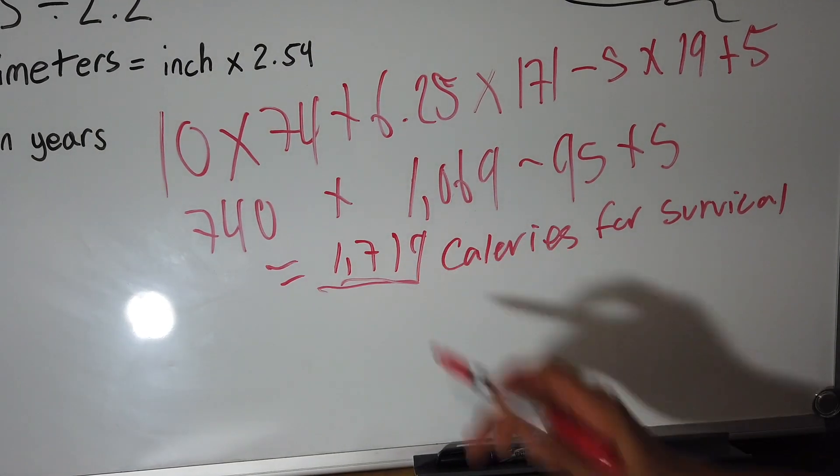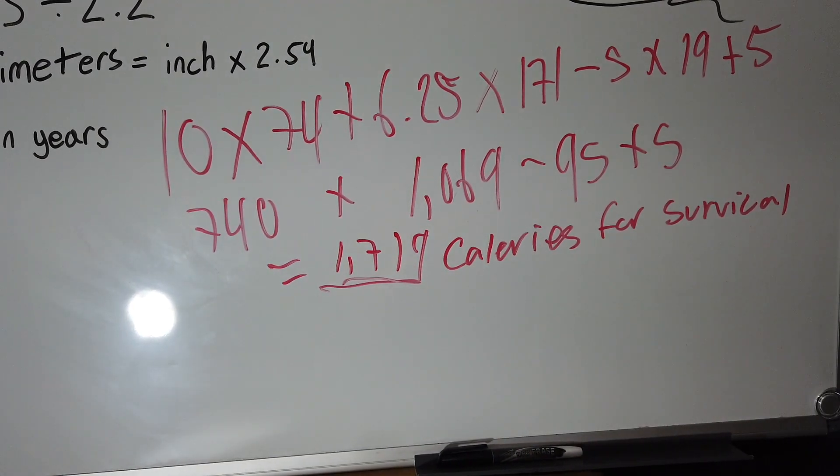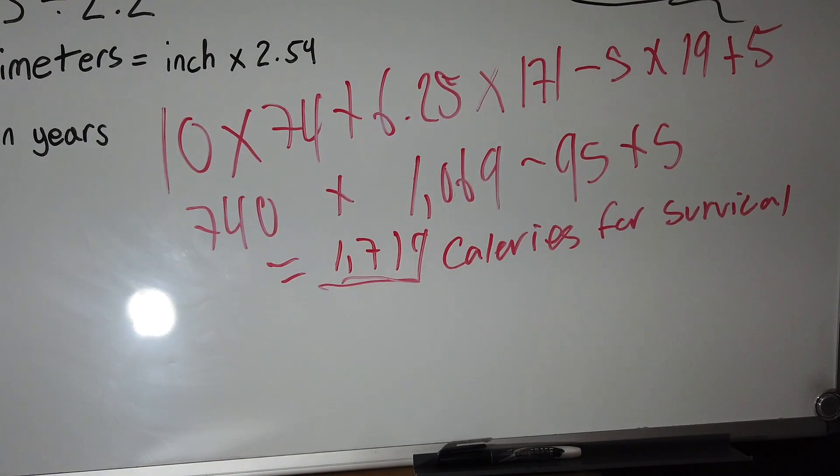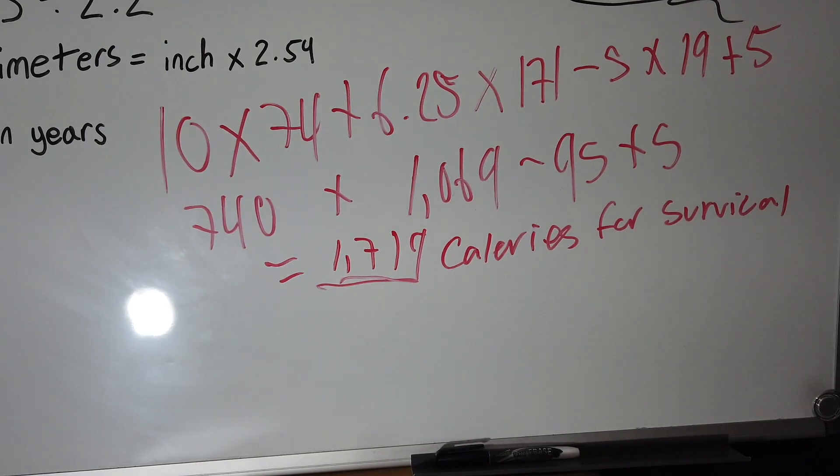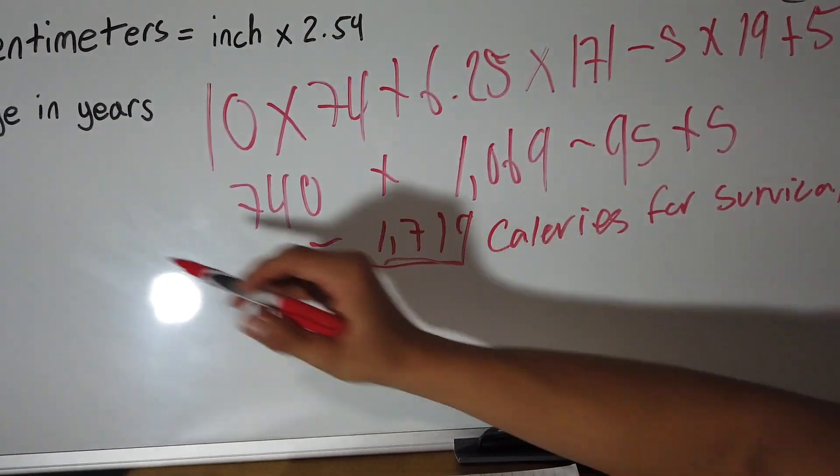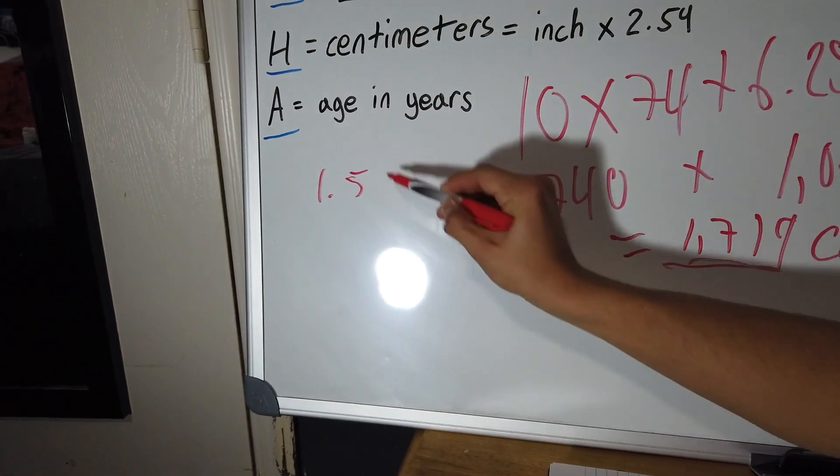So now once you have this, depending on whether you're really active or have a fast metabolism, or whether you're not that active or have a slow metabolism, you want to multiply this number by either 1.5 if you have a slow metabolism.